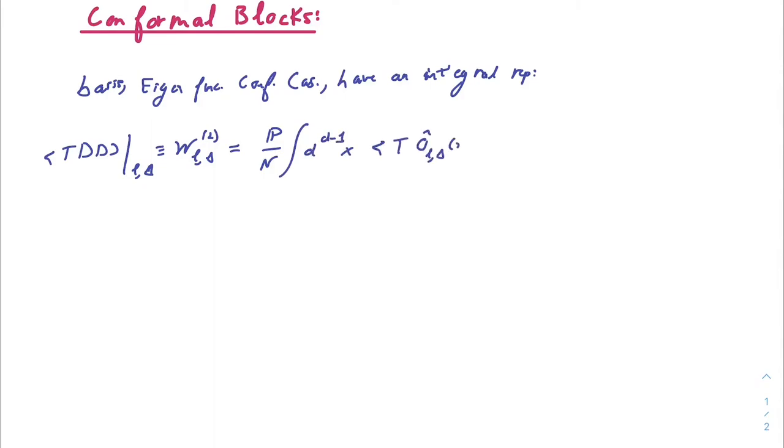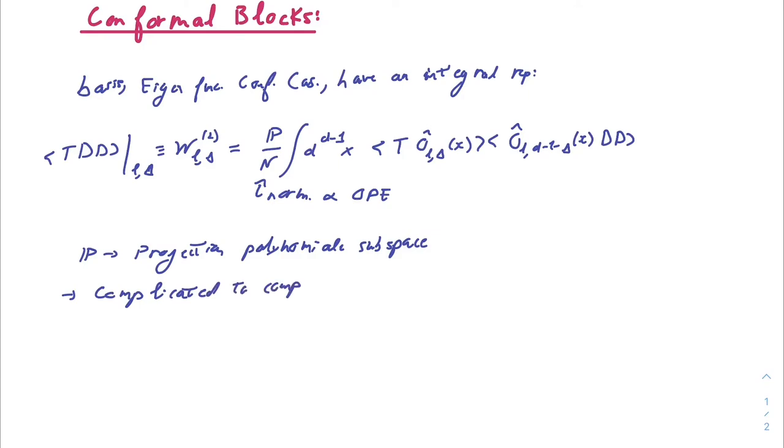this can be written as the integral of lower points function sewn together, where one of the operator is the operator that we're looking at, and the other is the exchange of the shadow operator, which has dimension d minus delta. And on top of it, you have some normalization coefficient n, which is proportional to some of the coefficients and some other kinematically determined factors, and p, which is a projection on some polynomial subspace, which is some formal procedure.